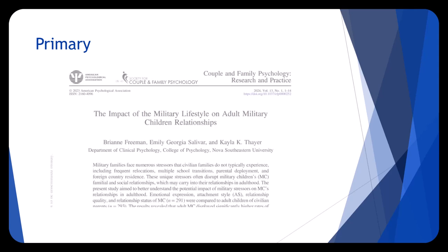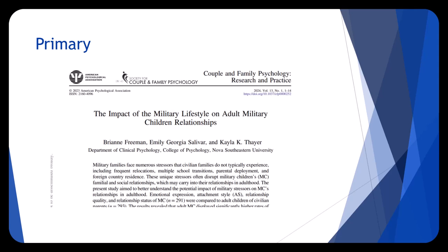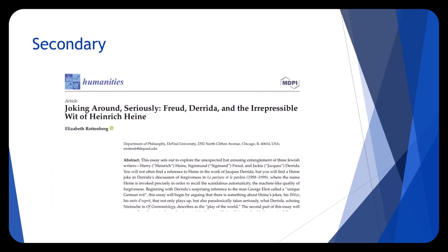For example, original scholarly research articles are considered primary sources in the sciences and social sciences, but are generally considered secondary sources in the humanities.